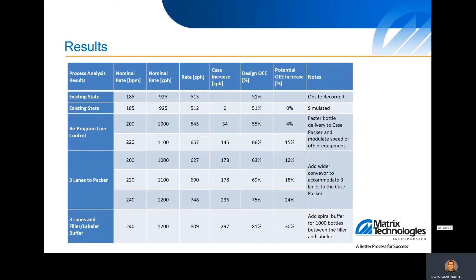We also simulated what happens if we can reprogram the line, get conveyors running a little bit faster, equipment running a little bit faster, just to get back up to the design rate of 200 bottles per minute and then even maybe faster to 220. You could see a 4 to 15% OEE increase.